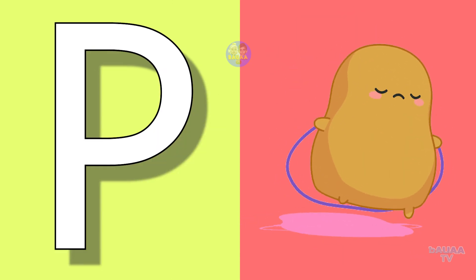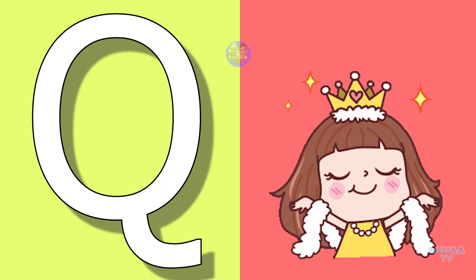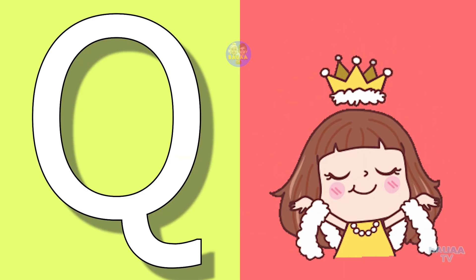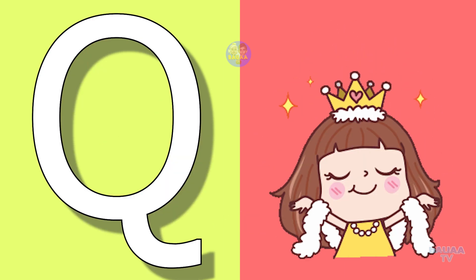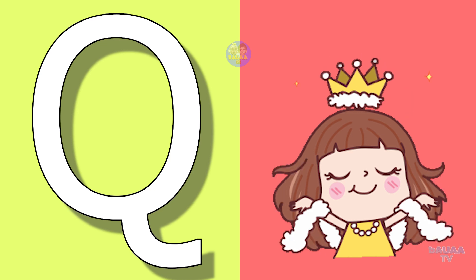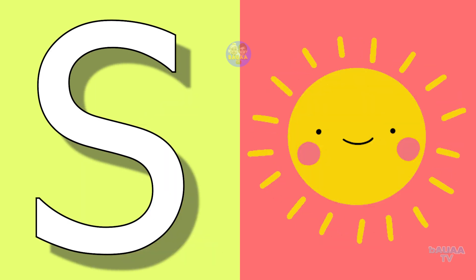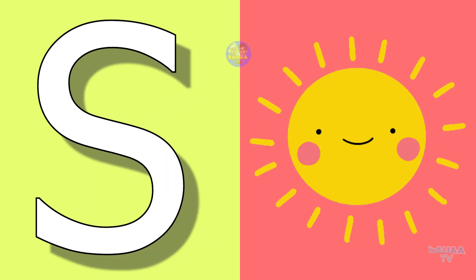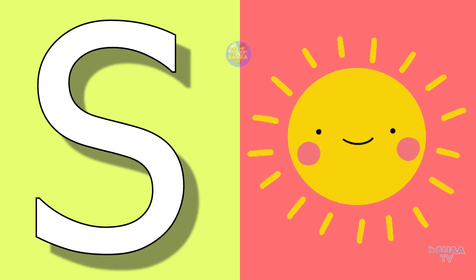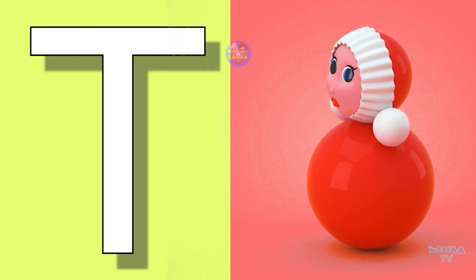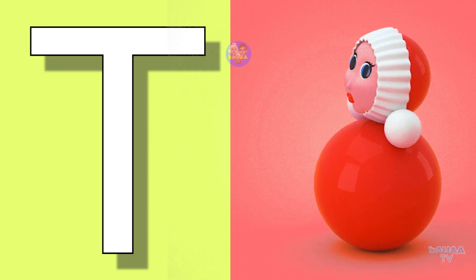P for potato, potato means aloo. Q for queen, queen means rani. R for red, red means lal. S for sun, sun means surya.